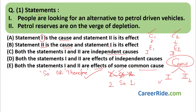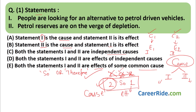Trying the other way: 'Petrol reserves are on the verge of depletion, therefore people are looking for an alternative to petrol-driven vehicles.' This makes absolute sense. The sentence before 'so/therefore' is your cause; the sentence after is your effect. Here, statement two is the cause and statement one is its effect. Answer is B.